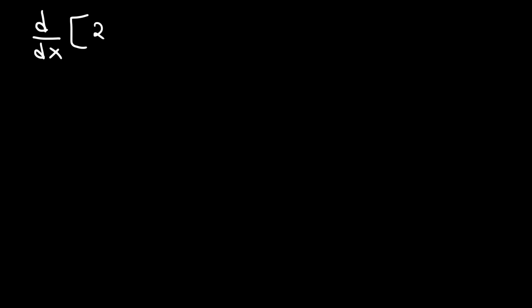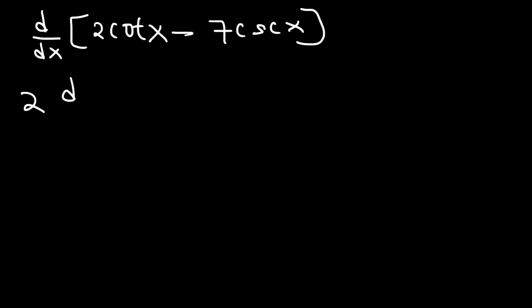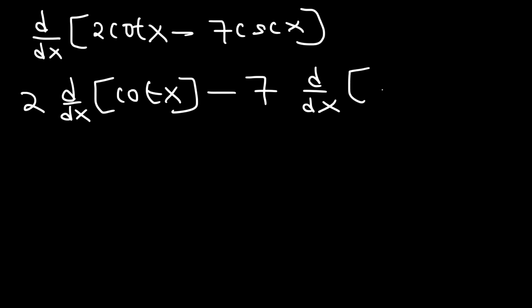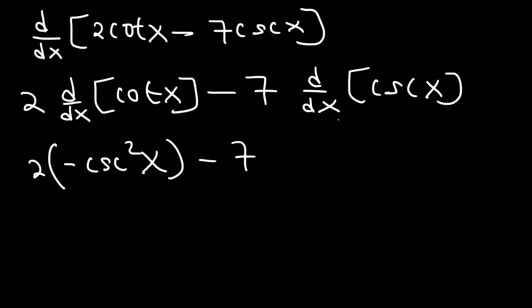Now let's work on one more example: the derivative of 2 cotangent x minus 7 cosecant x. This is going to be 2 times the derivative of cotangent x, minus 7 times the derivative of cosecant x. The derivative of tangent is secant squared, so the derivative of cotangent is cosecant squared — but because it starts with a 'c,' it gets a negative sign, making it negative cosecant squared x. The derivative of secant is secant tangent, so the derivative of cosecant is negative cosecant cotangent.